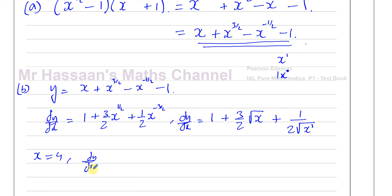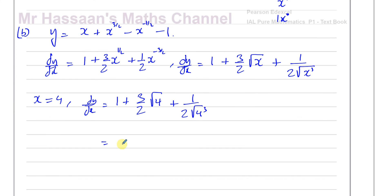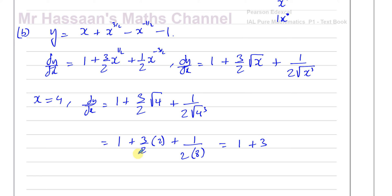When x equals 4, we substitute into dy/dx: 1 plus 3 over 2 times the square root of 4, plus 1 over 2 times the square root of 4 cubed. The square root of 4 is 2, so this gives 1 plus 3 over 2 times 2, plus 1 over 2 times 8. The 2s cancel in the first term giving 3, and 1 over 2 times 8 gives 1 over 16. So the result is 1 plus 3 plus 1 over 16, which is 4 and 1 over 16, or as an improper fraction, 65 over 16. Both are perfectly fine answers.